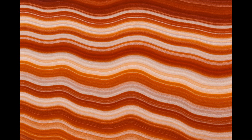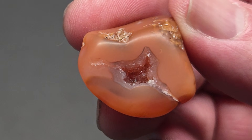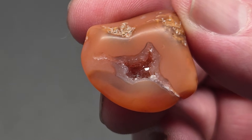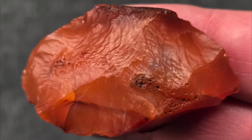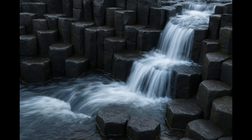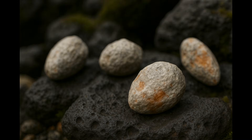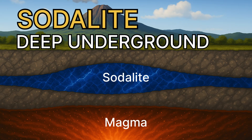Iron oxides tint the growing layers orange and red, giving carnelian agate its warm glow. Some cavities stay partly open and grow quartz crystals in the center, while others fill completely, forming solid agate nodules. Much later, weathering breaks down the softer basalt around them, releasing carnelian agate into streams, riverbeds, and gravel bars.